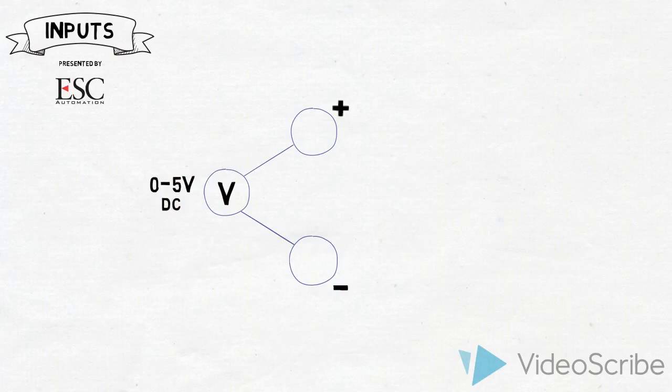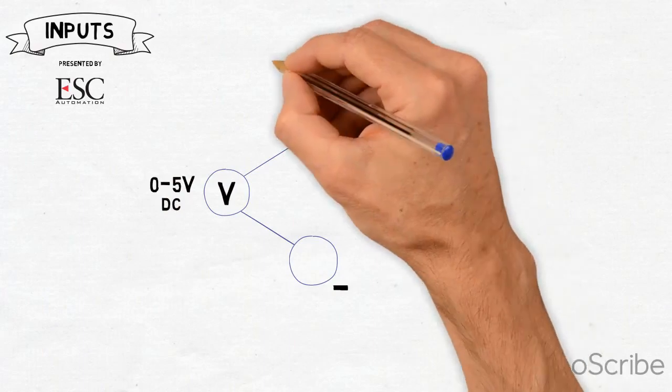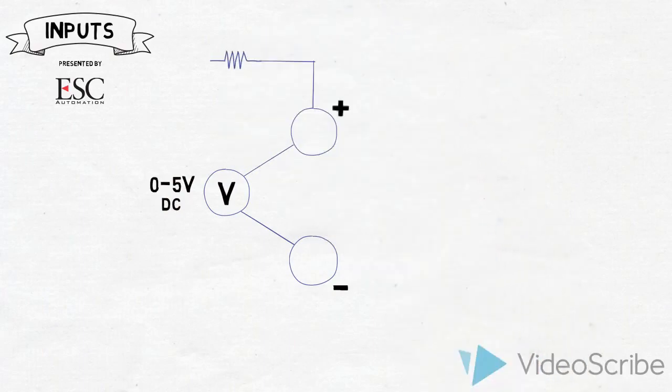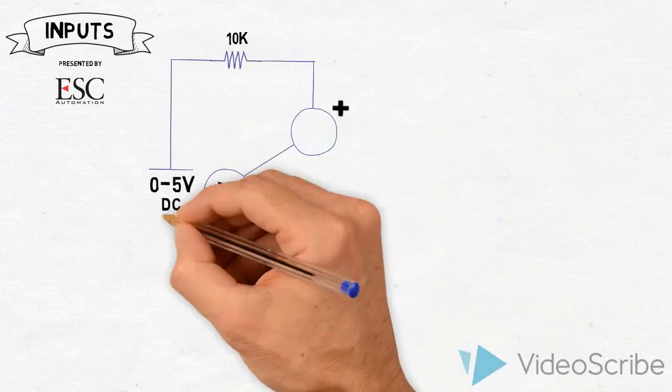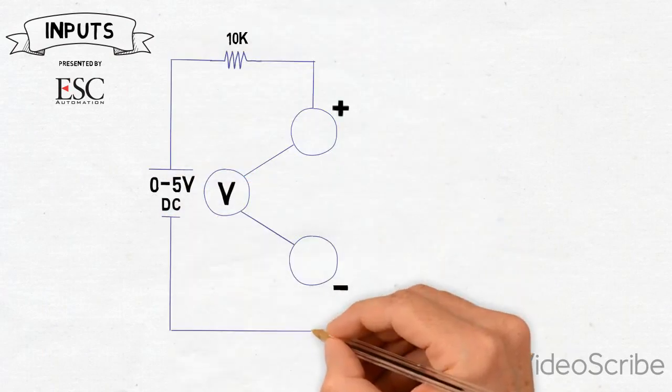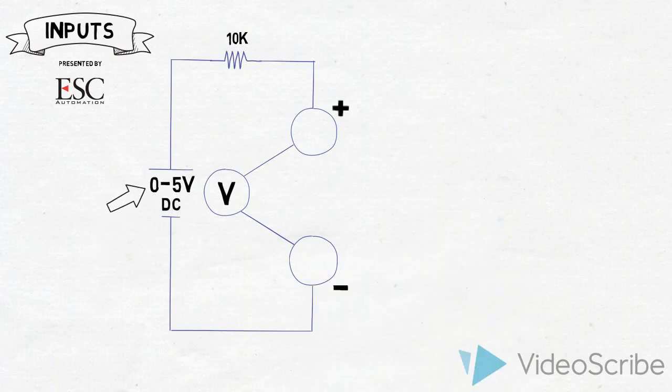Some older panels were zero to six volts. On the panel side, there's a 10K resistor and a power supply. The power supply that the panel provides is zero to five volts.